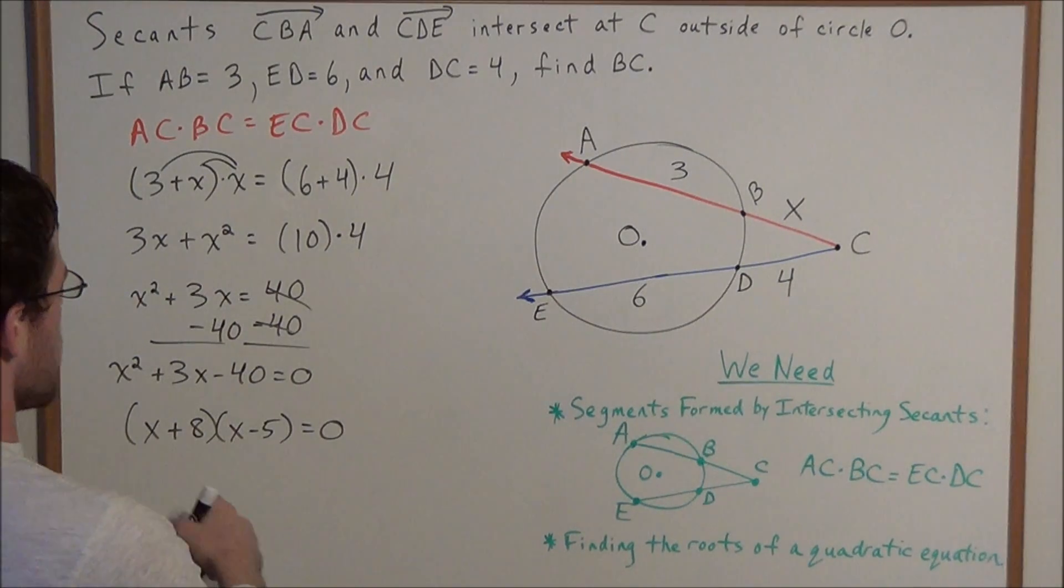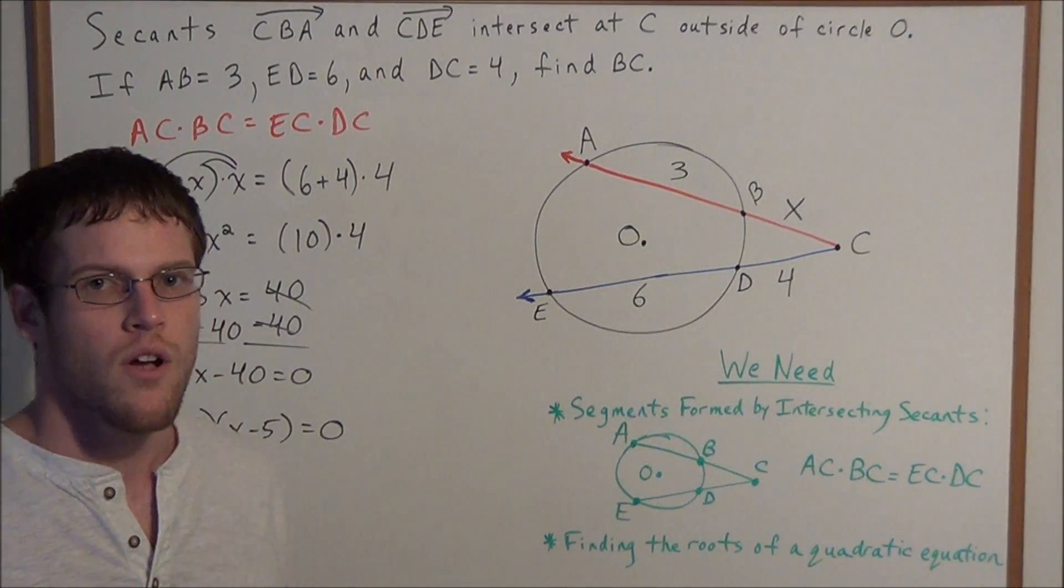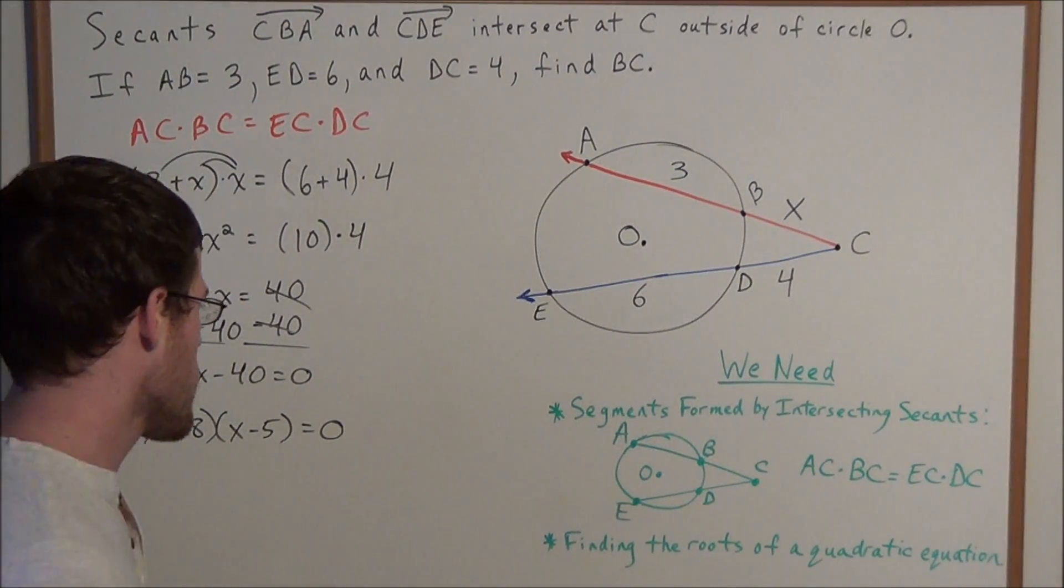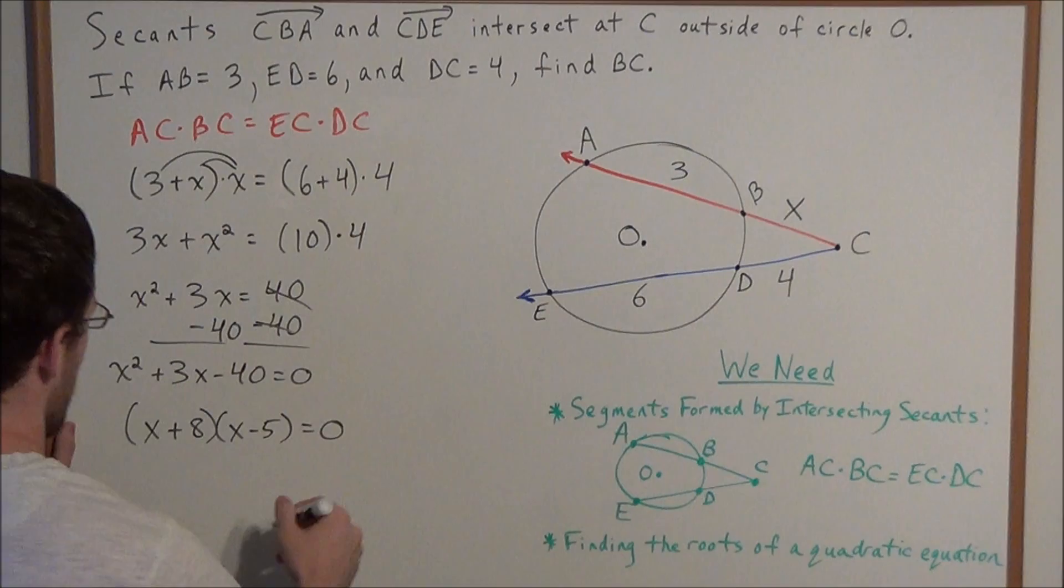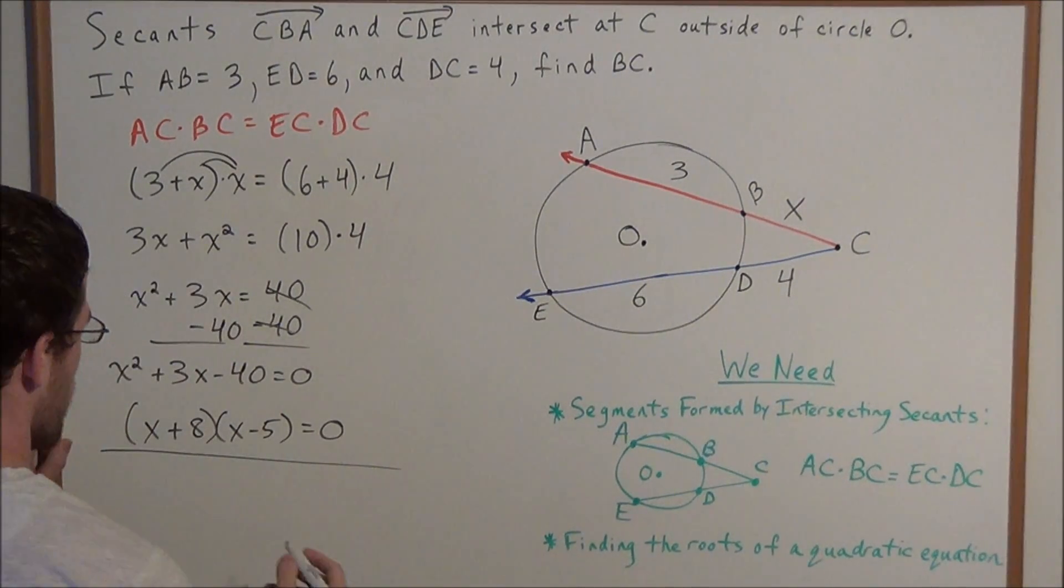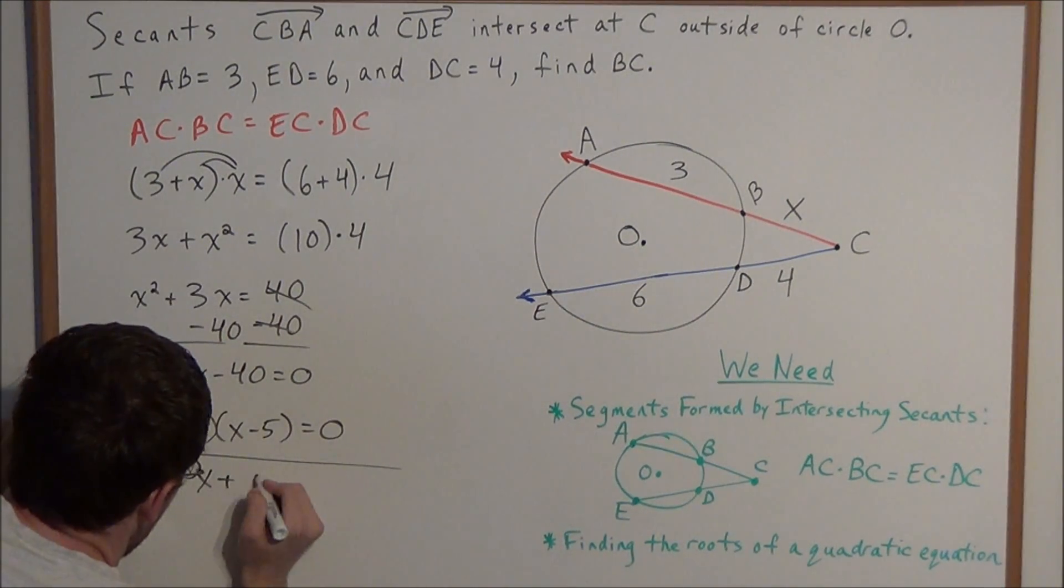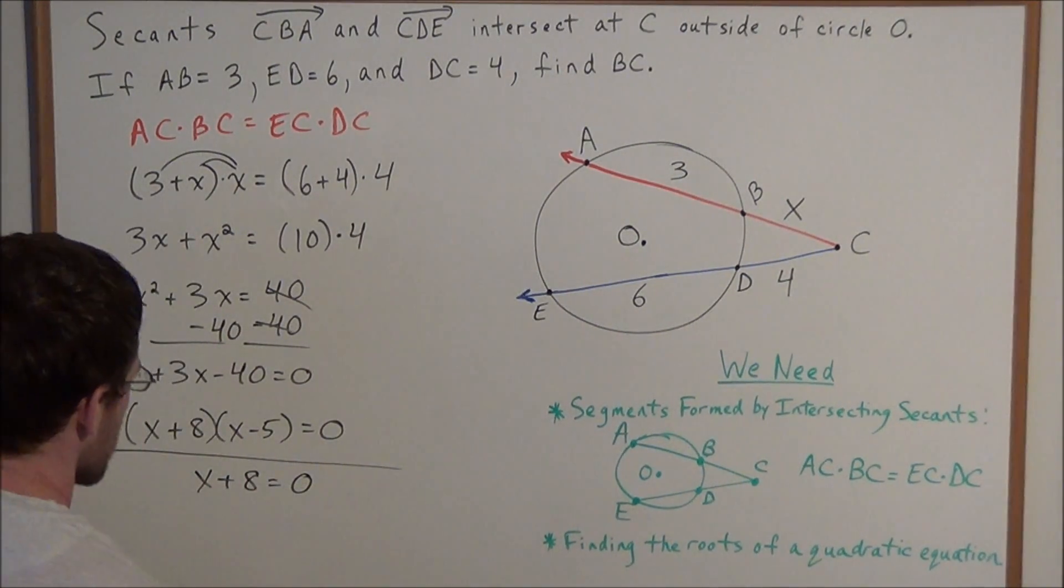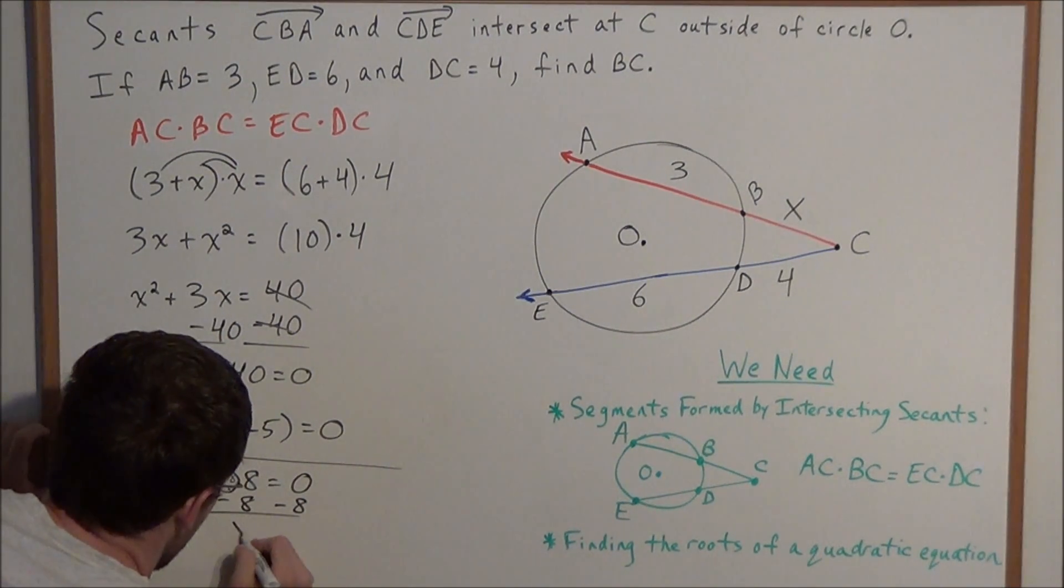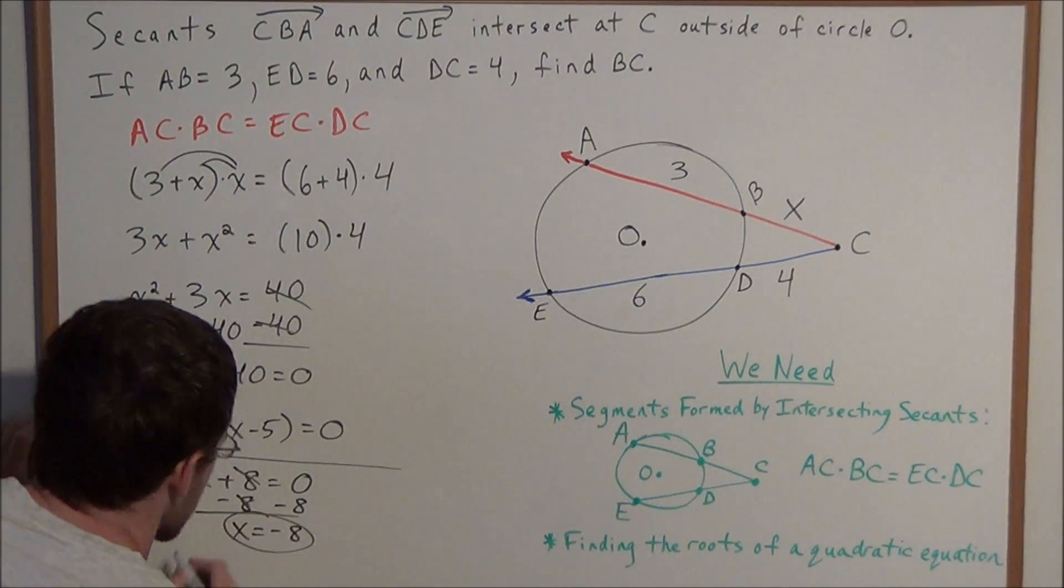Now we need to consider two cases because we have the product of two numbers equals 0. For this to be true, at least one of them needs to be 0. So we have two cases to look at. Either X plus 8 equals 0, which when we solve for X by subtracting 8 from both sides, tells us X equals negative 8 is one possible solution.